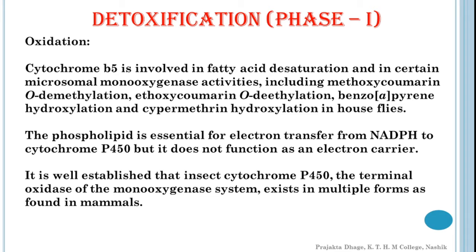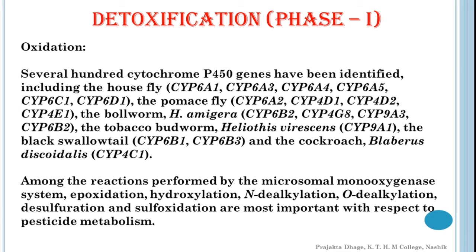It is well established that insect cytochrome P450, the terminal oxidase of the monoxygenase system, exists in multiple forms as found in mammals. As many as 6 forms were isolated from the housefly Musca domestica, 4 forms from the flesh fly and the black blow fly, 3 forms from the pomace fly and 2 forms from the black swallowtail. The multiplicity of cytochrome P450 would explain why the microsomal monoxygenase system possesses a broad substrate specificity capable of oxidizing various functional groups of lipophilic organic molecules.